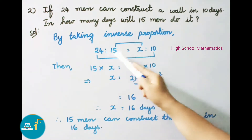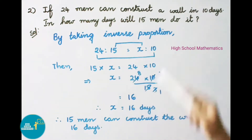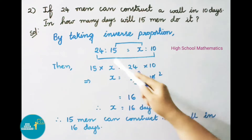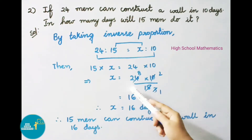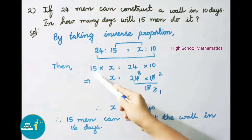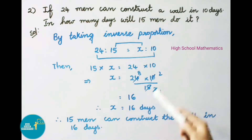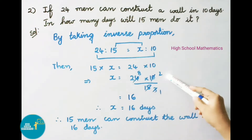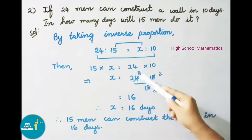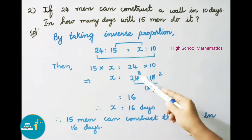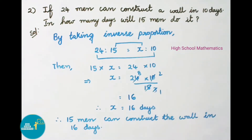We know product of means is equal to product of extremes. So 15 into x is equal to 24 into 10. That implies x equals 24 into 10 divided by 15. Simplifying: 5 divides into 10 giving 2, and 5 divides into 15 giving 3; 8 divides into 24 giving 3. So x equals 8 into 2, that is 16. Therefore x value is 16 days. Therefore 15 men can construct the wall in 16 days.